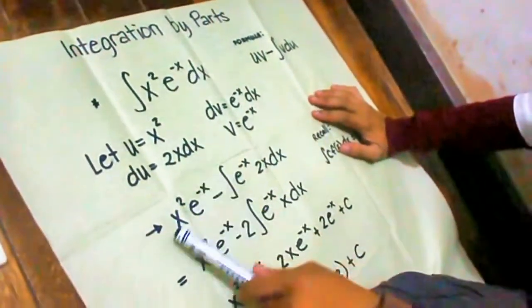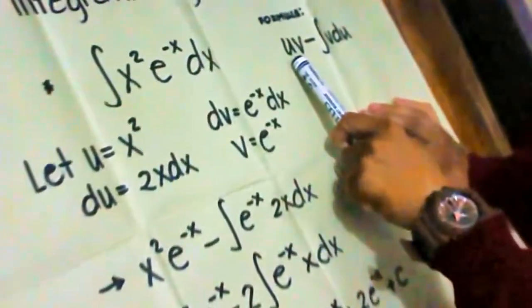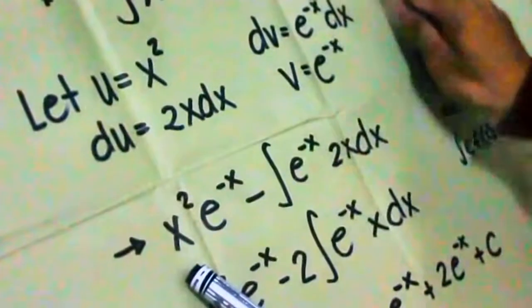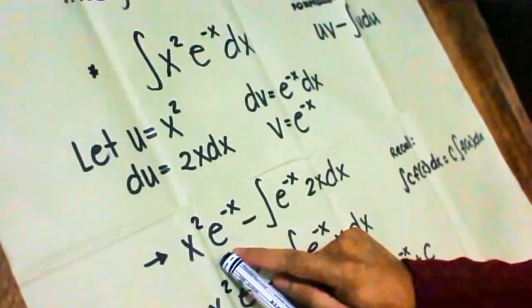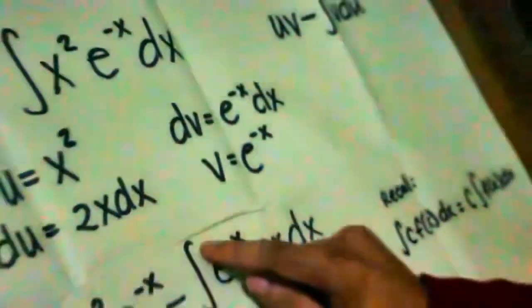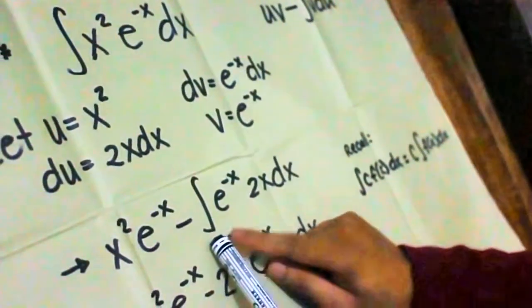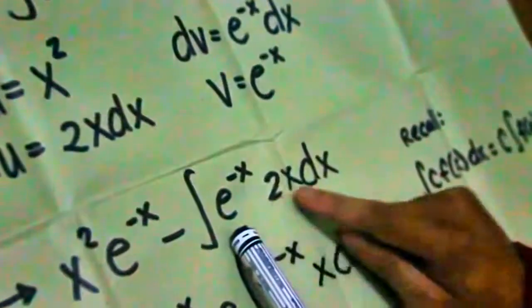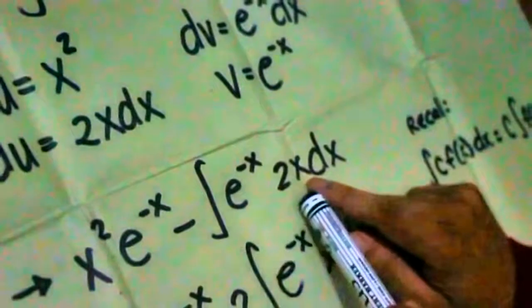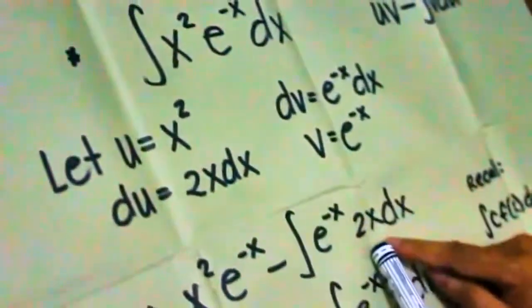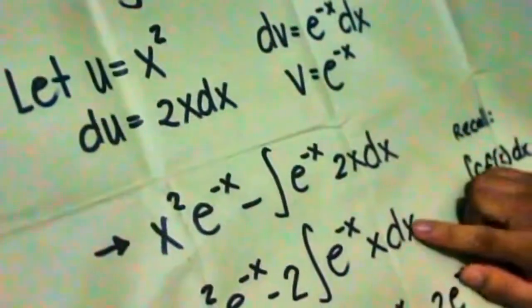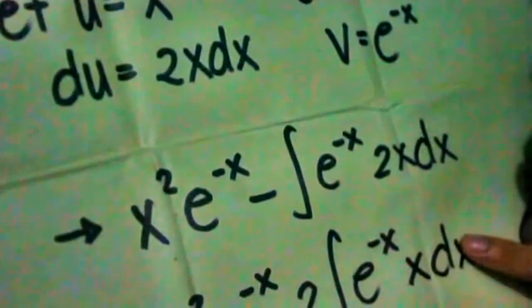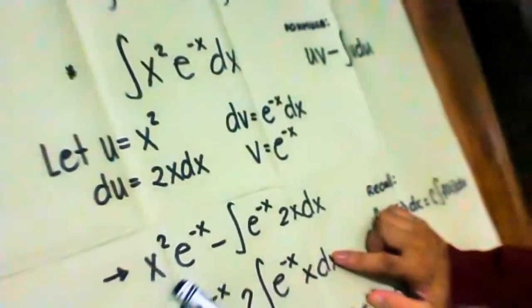We're going to start our integration by parts. First we write our u, which is x squared. So u times v gives us x squared times e to the negative x, minus the integral of v — which is e to the negative x — multiplied by du, which is 2x dx.